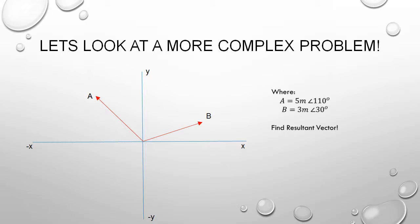The problem that we just went through is pretty simple, and most of those problems on your test will not be that simple. Let's look at a more complex problem. Here we want to find the resultant vector of two vectors that are added together: vector A and vector B, where vector A equals 5 meters at 110 degrees and vector B is 3 meters at 30 degrees.